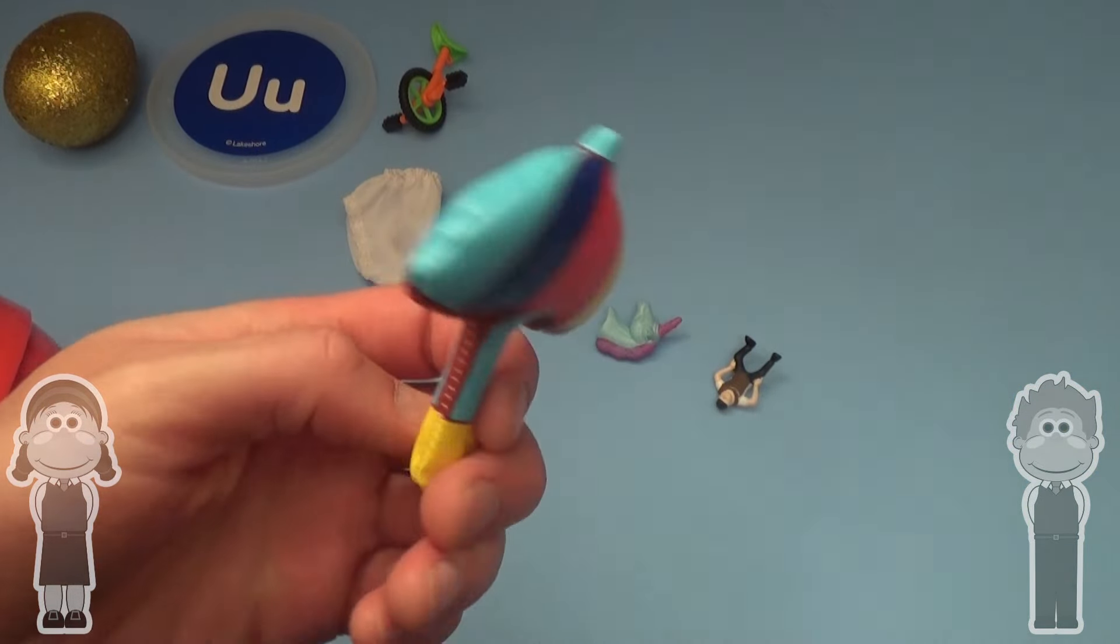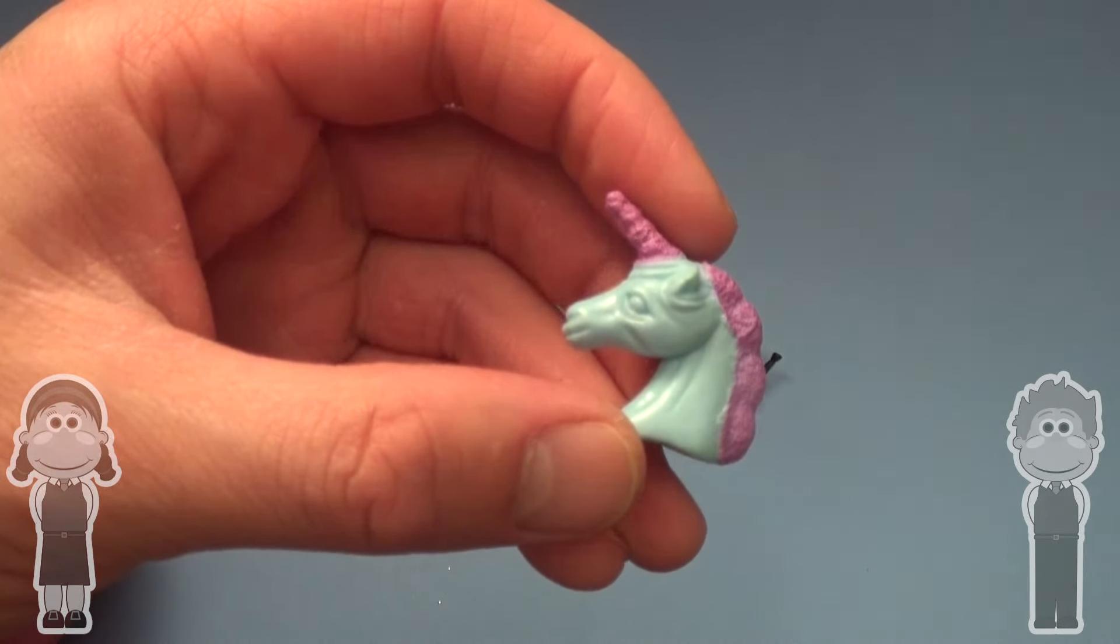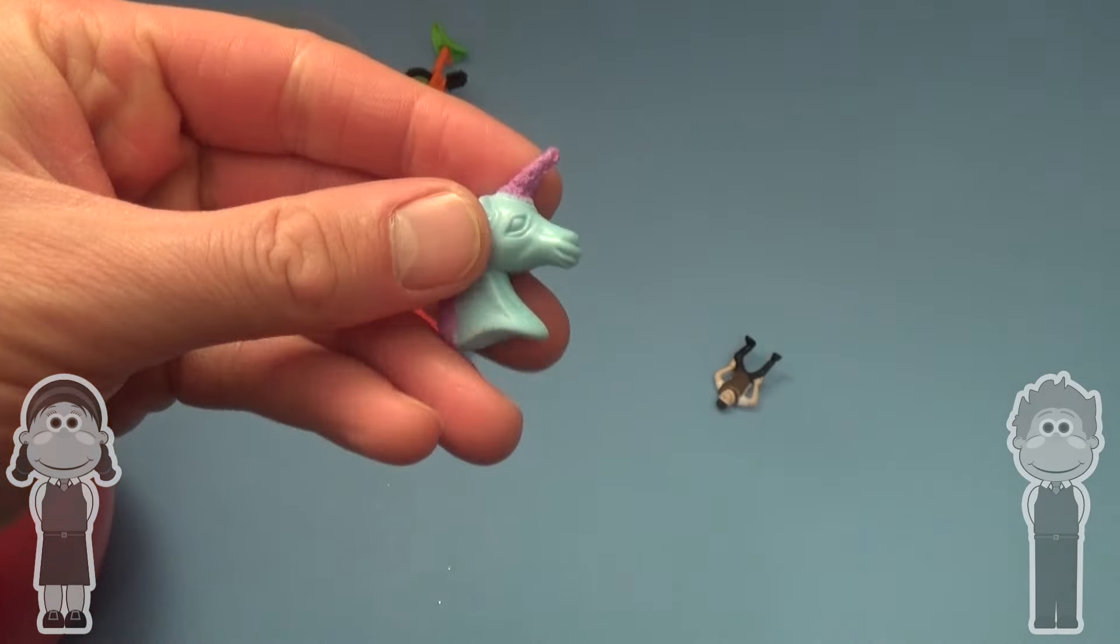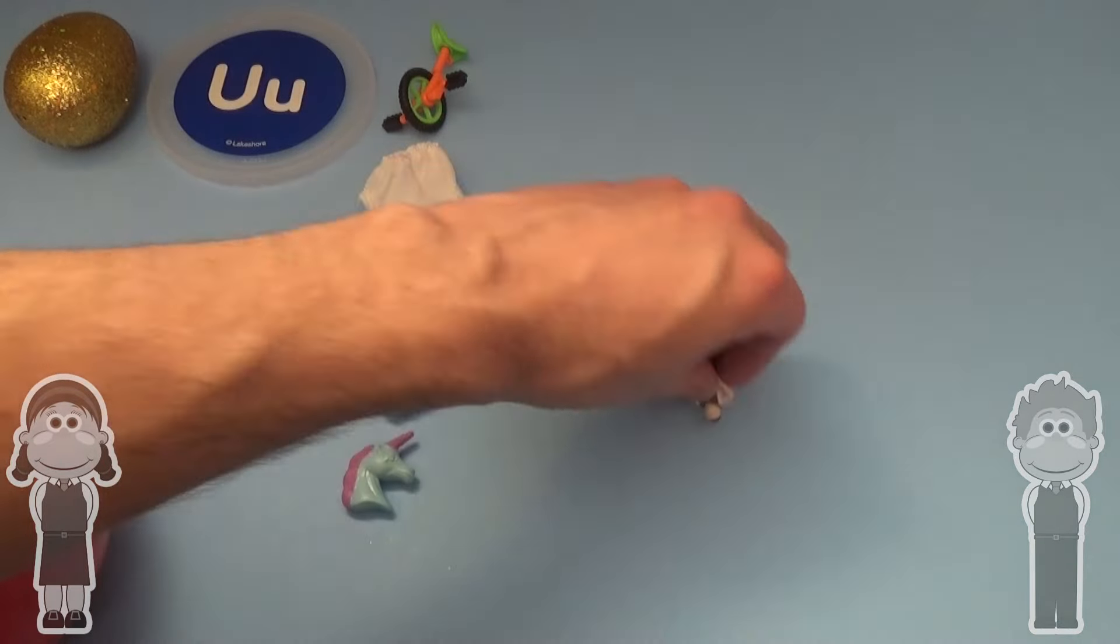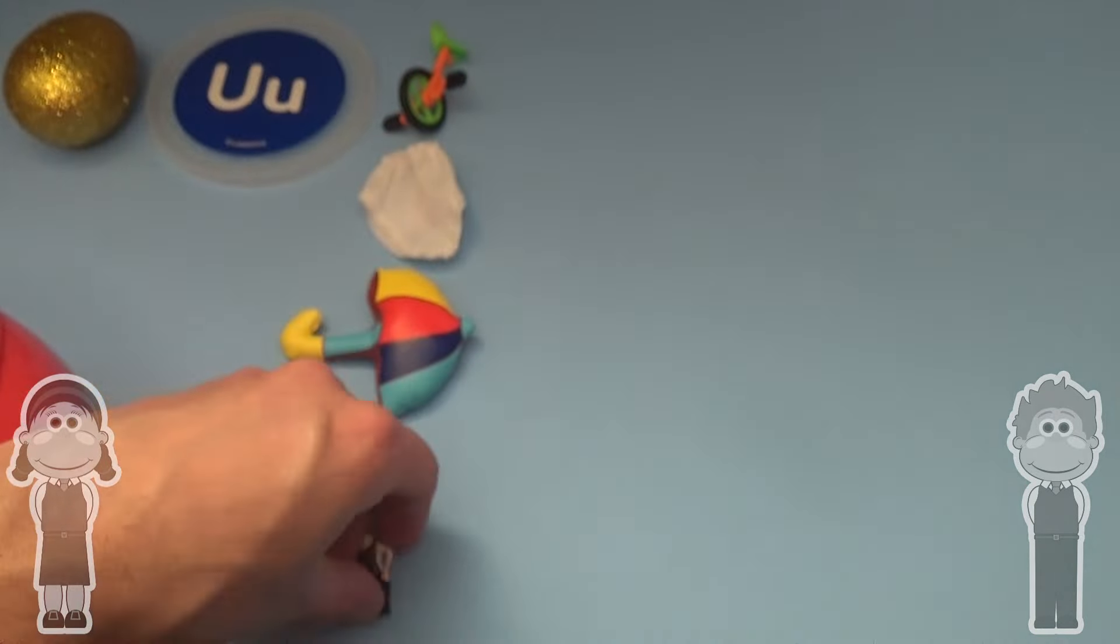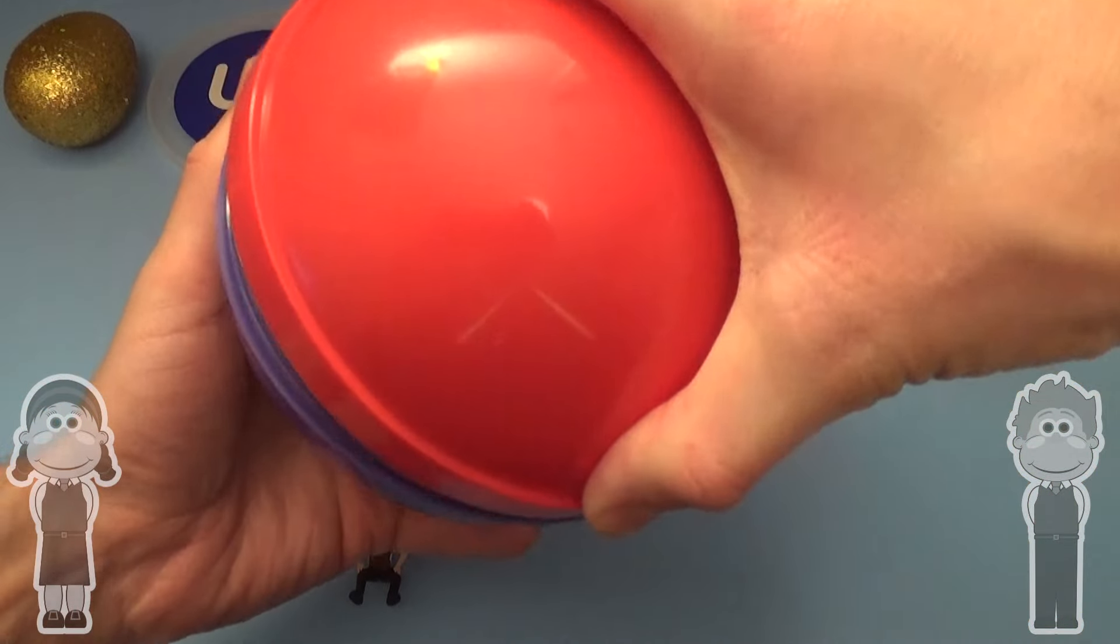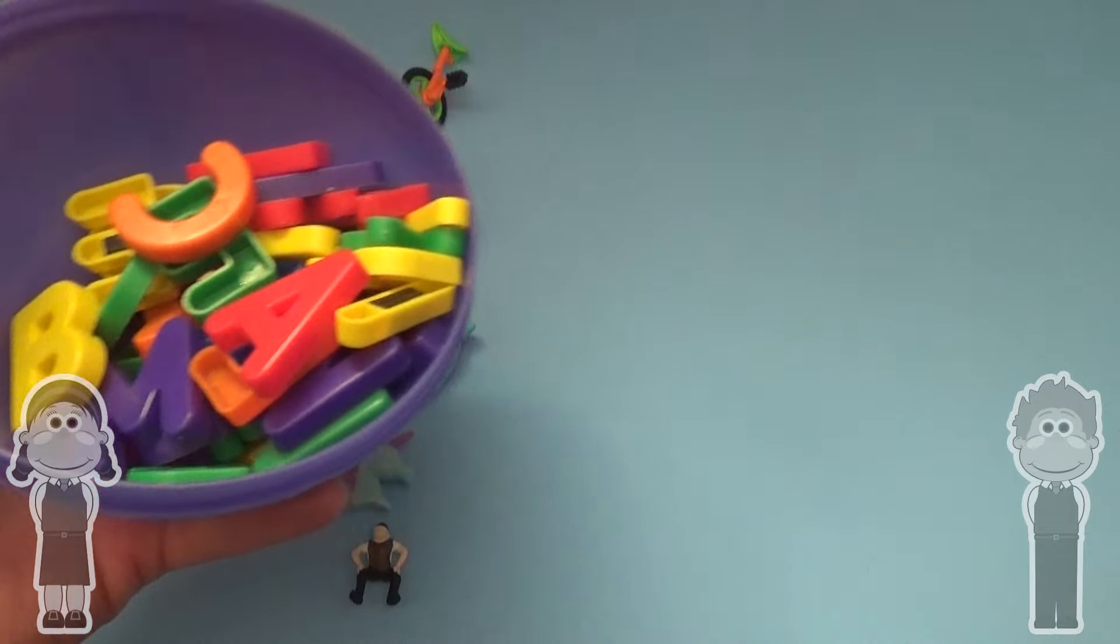Okay! Wow! Let's write! Now let's use the letters and spell out these things that start with U.